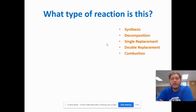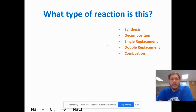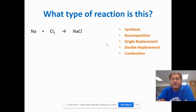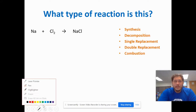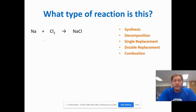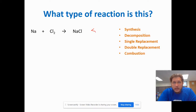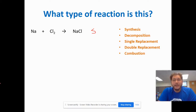Let's quickly go through some examples. Our first one: Na plus Cl2 yields NaCl. We have two reactants and one product. One product means this is a synthesis reaction.